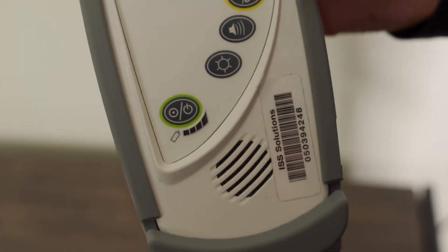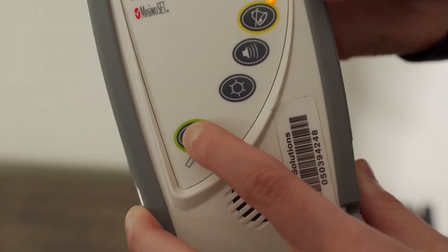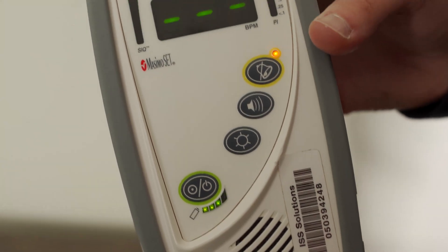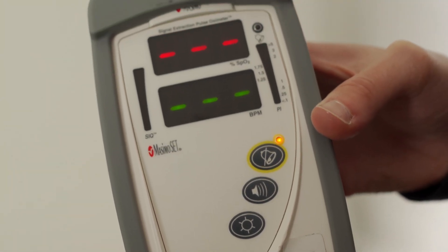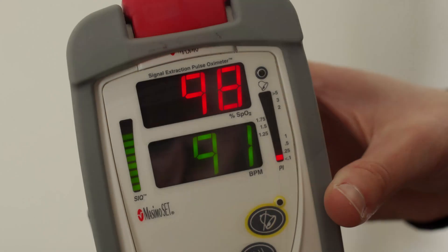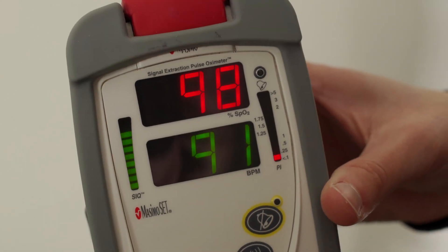Next, you'll turn on the equipment by pushing the button at the bottom. After a few moments, the numbers will appear. The number on the top is the percent SpO2, and the number on the bottom is the heart rate.